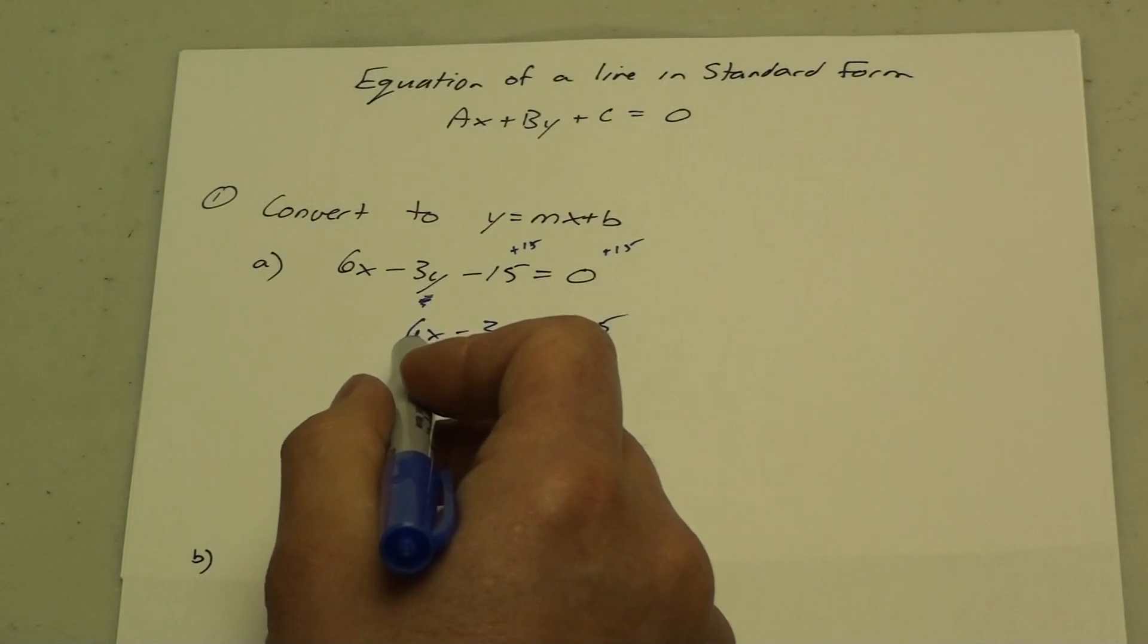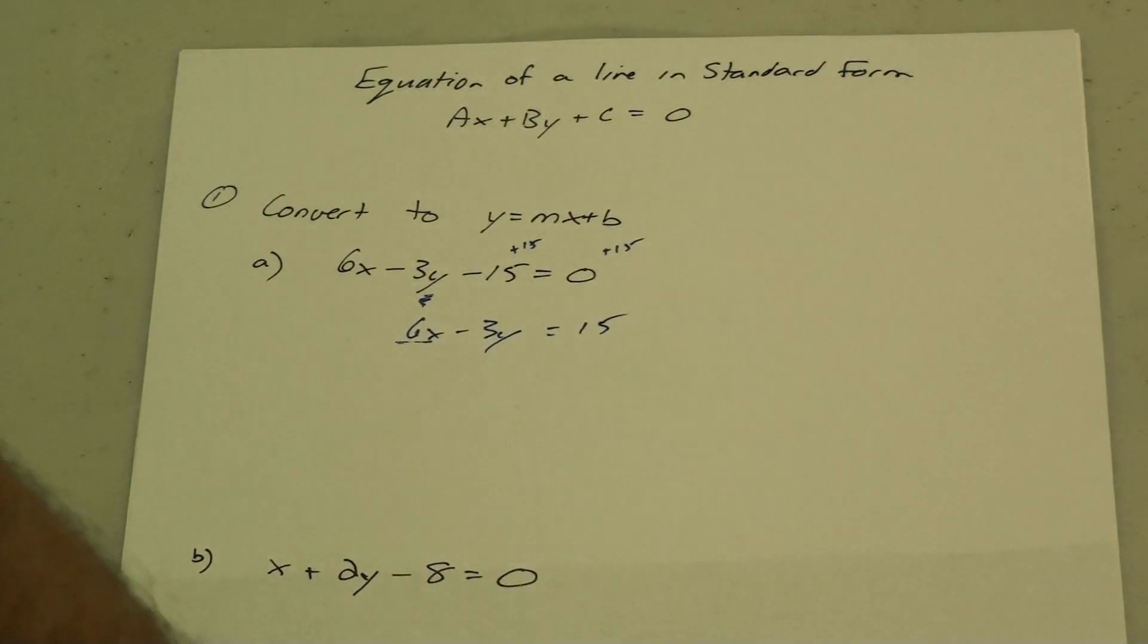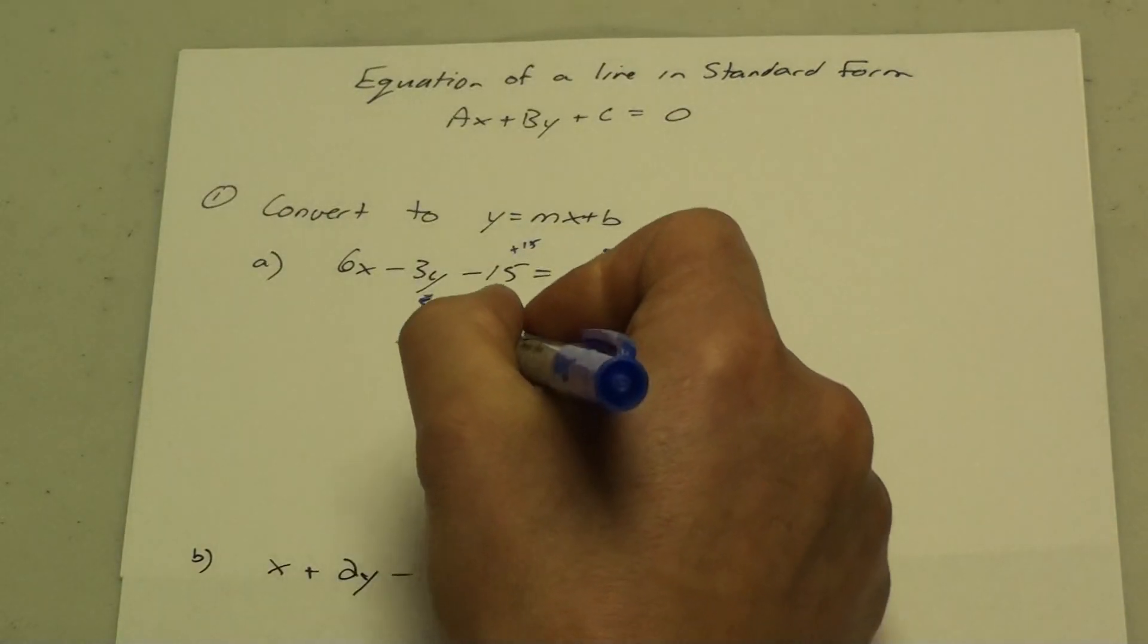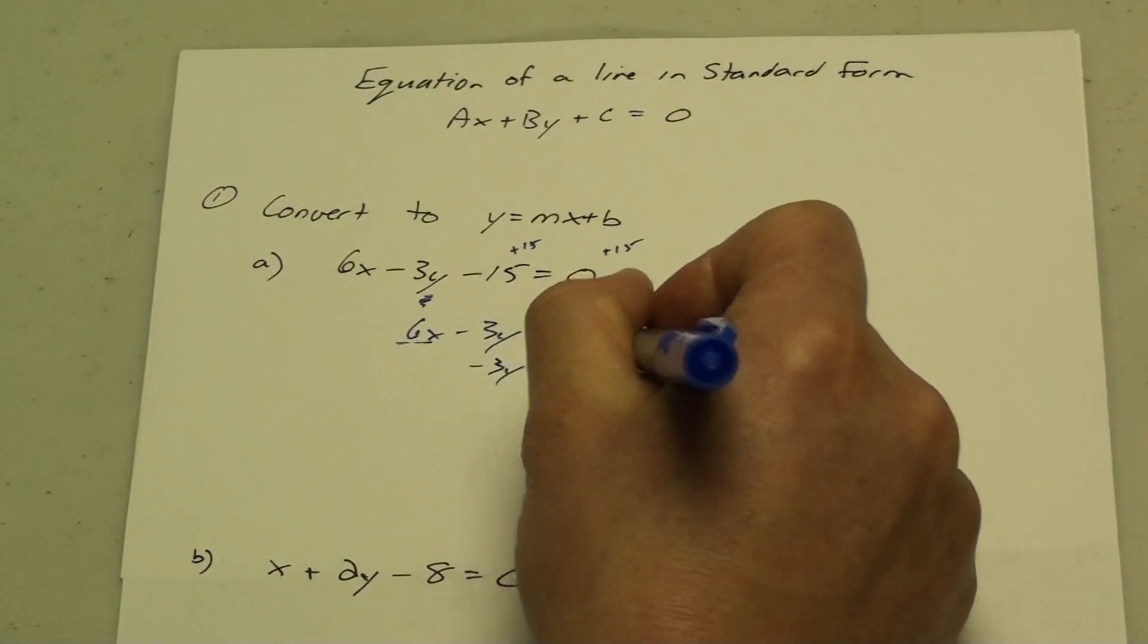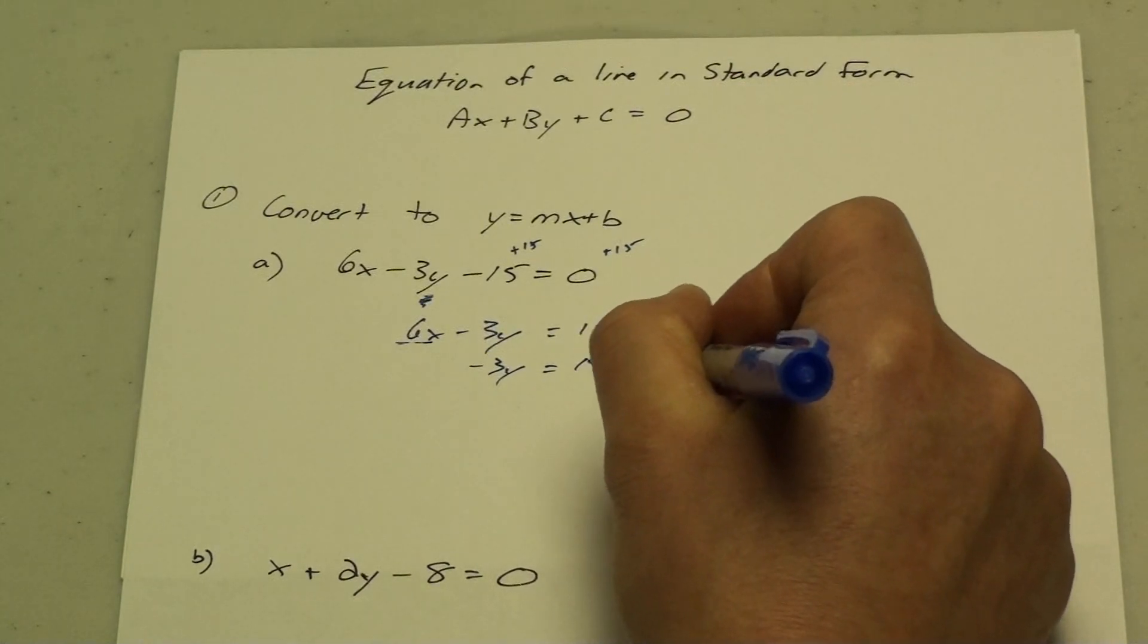Next, I want to move this 6x over to the other side. I'm going to do so by subtracting 6x from both sides. Negative 3y equals 15 minus 6x.